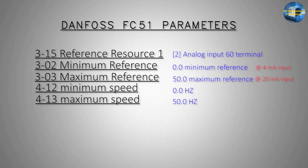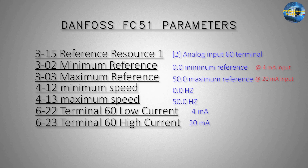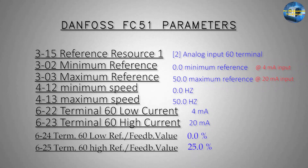Next we can limit the maximum and minimum speed of the motor using parameters 4-12 and 4-13. We can also set the minimum and maximum limits of the analog signal as 4 mA to 20 mA by setting parameters 6-22 and 6-23. Next we have to set parameter 6-24 low reference as 0.0 and maximum reference 6-25 as 25.0. These two parameters are a little tricky, so adjust them carefully — they are used to scale the reference input analog signal.